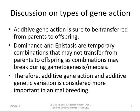Additive gene action is certain to be transferred from parents to offspring — we know the individual effect of every allele would be passed on. But dominance and epistasis are temporary combinations that may not transfer from parents to offspring, as those combinations may break during gametogenesis or meiosis. Therefore, dominance and epistasis are not considered in our calculations, and additive genetic variation is considered more important in animal breeding.